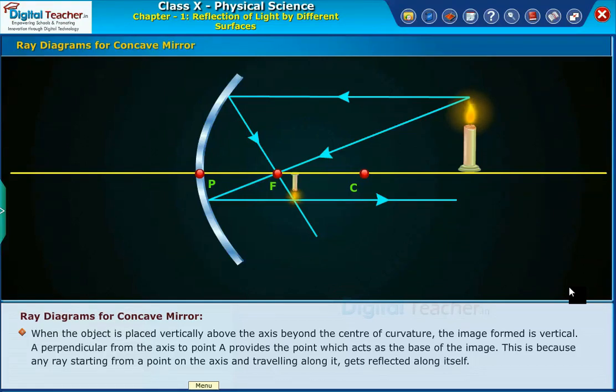A perpendicular from the axis to point A provides the point which acts as the base of the image. This is because any ray starting from a point on the axis and traveling along it gets reflected along itself.